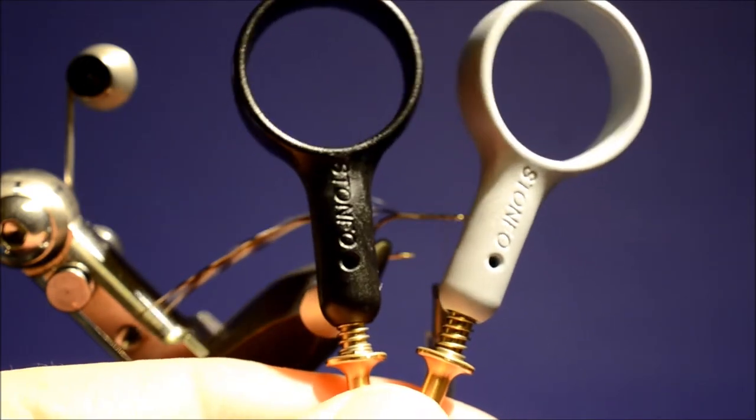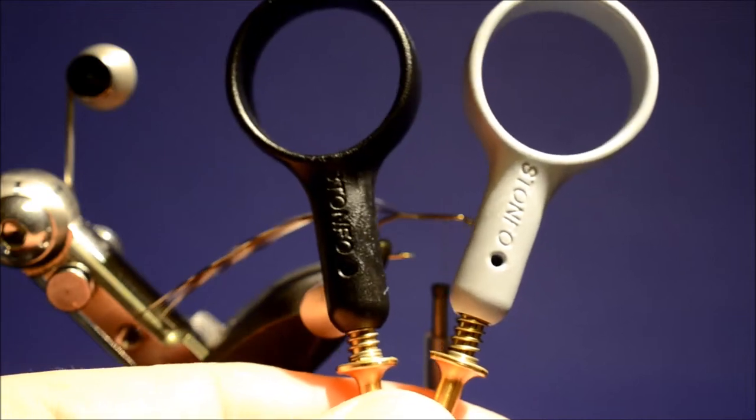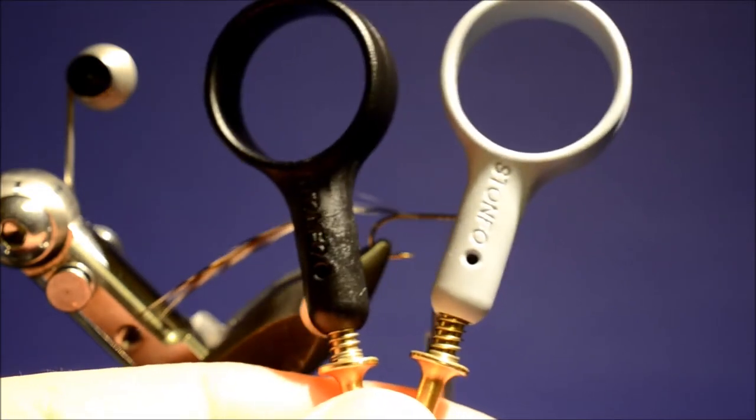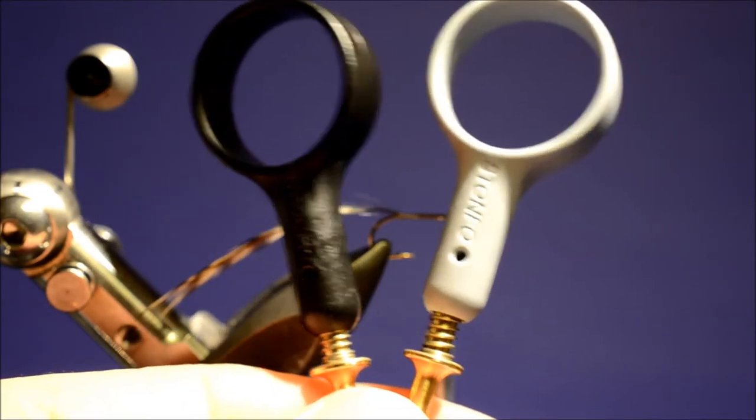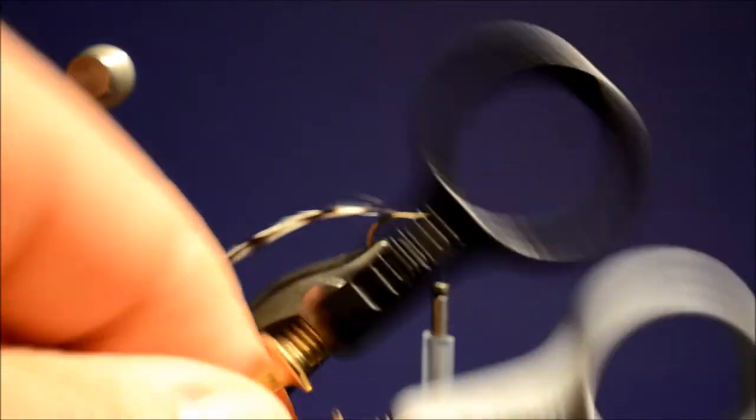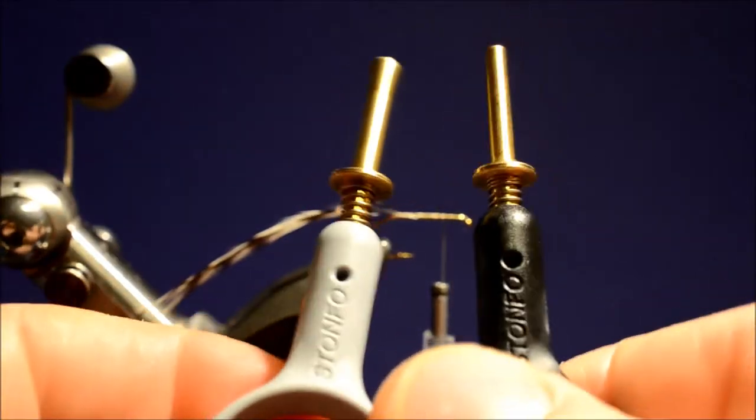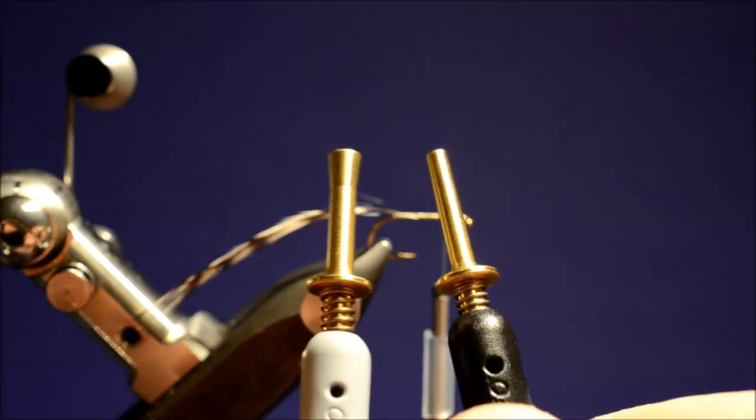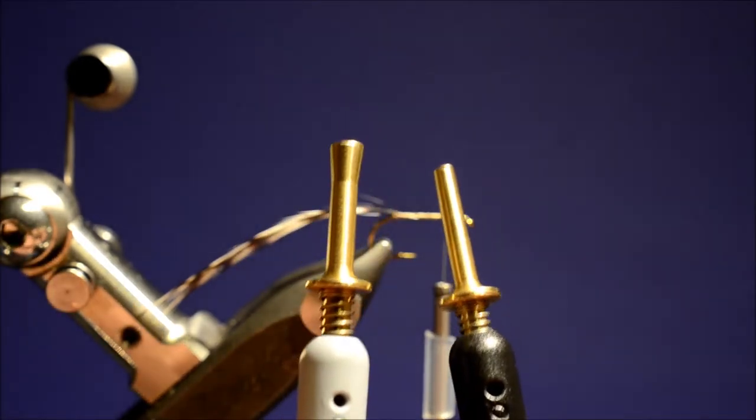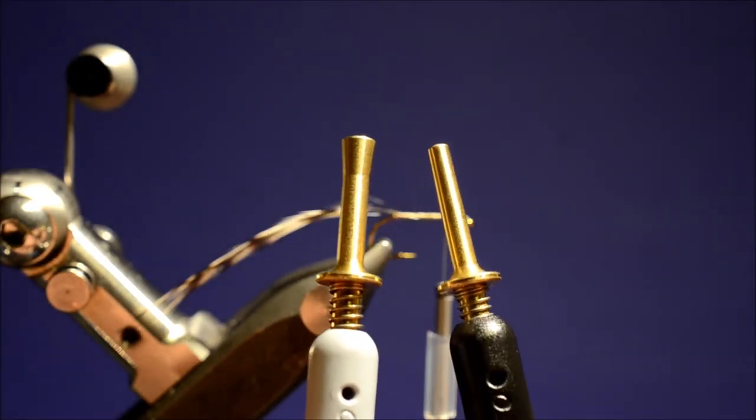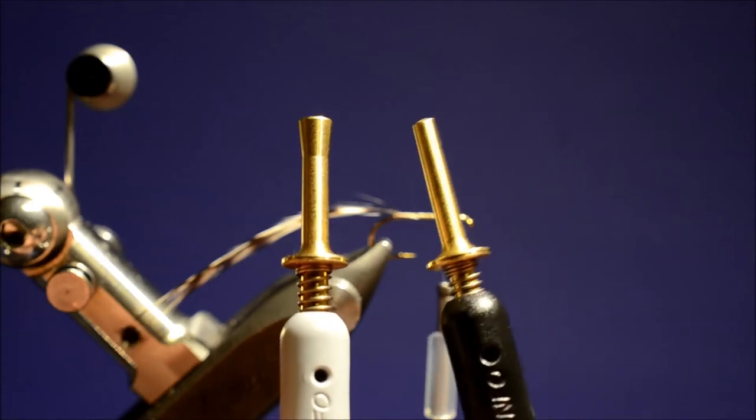This elite hackle pliers come in two sizes, one micro and one standard. The micro is the black one and the standard is the grey one. You can also see the difference in size and diameter on the tubing. You see the micro is on the right side here.